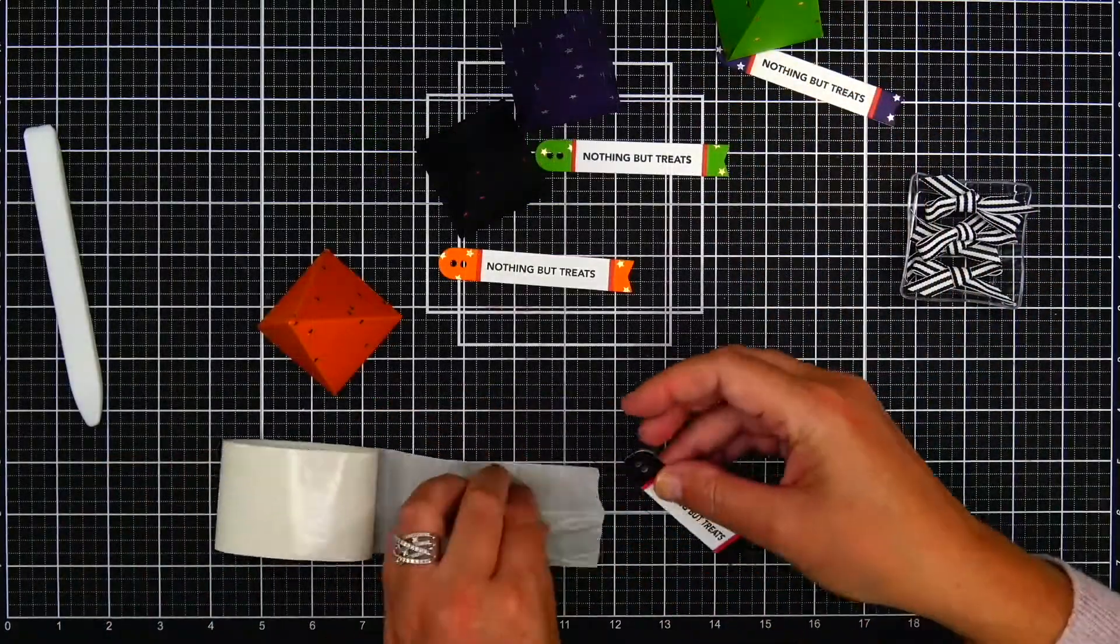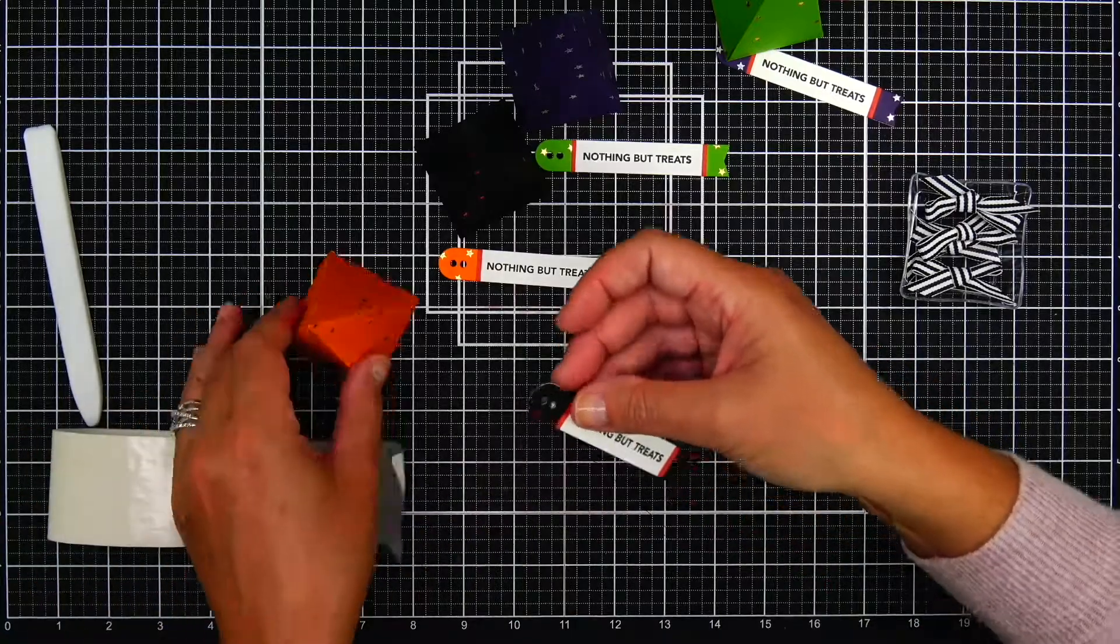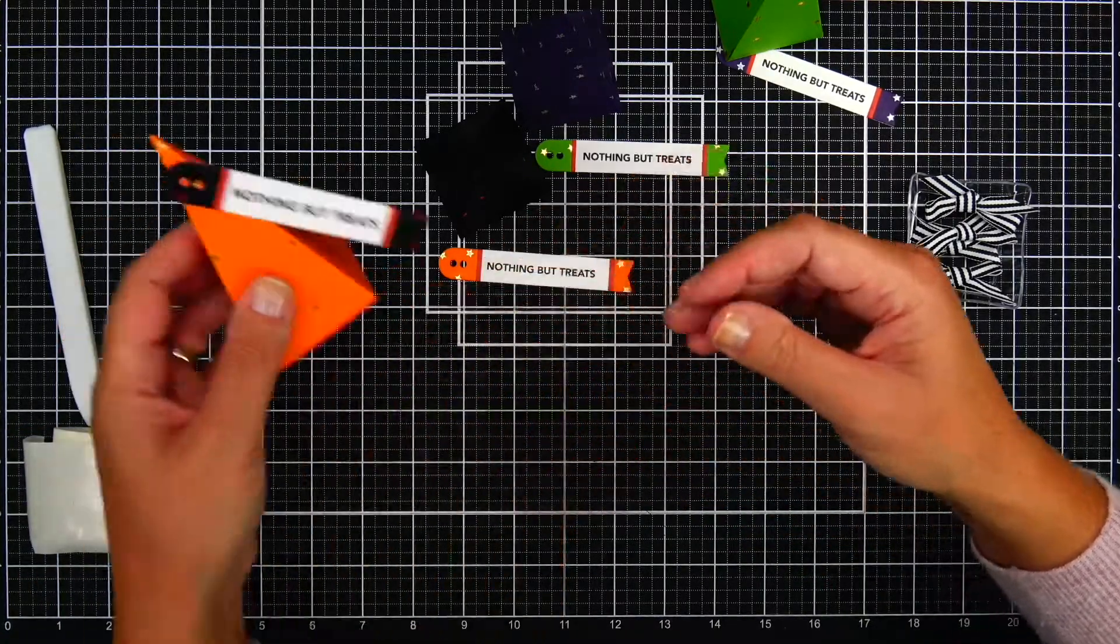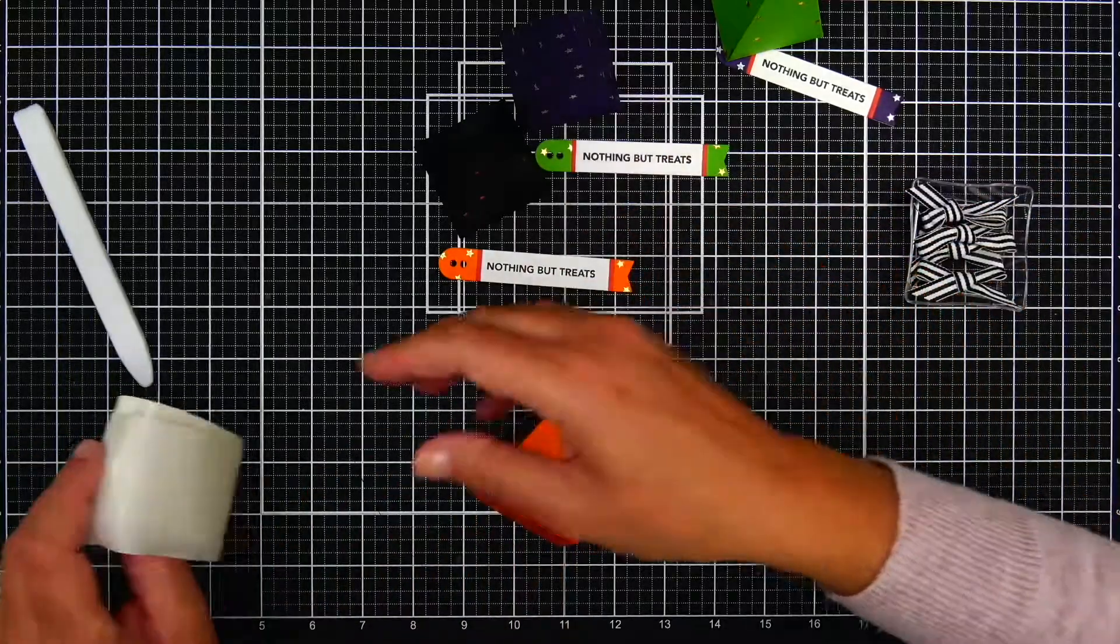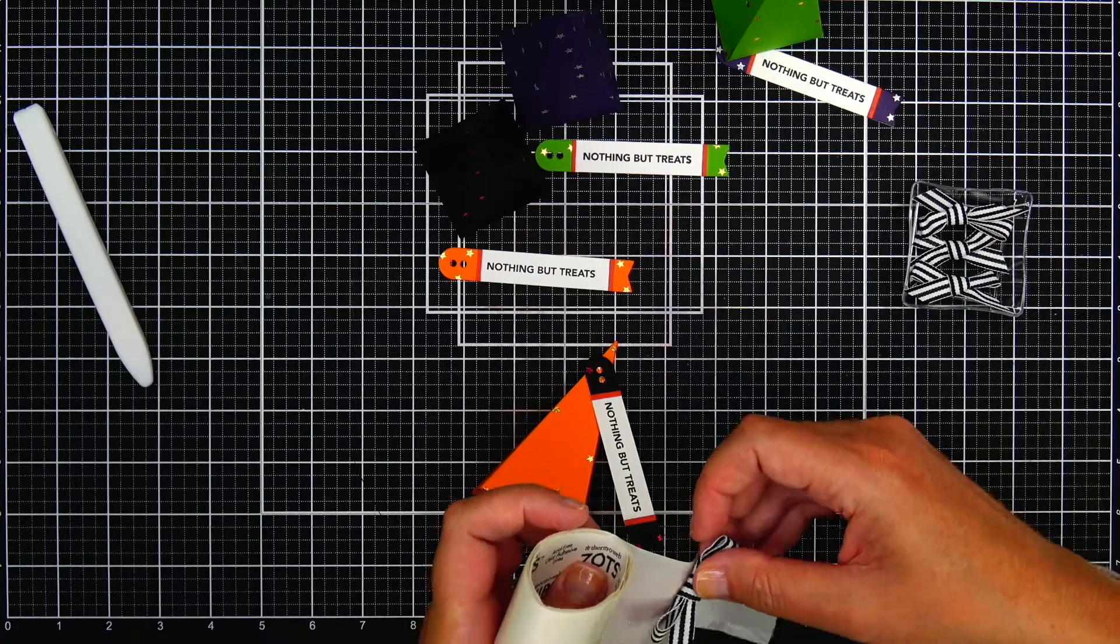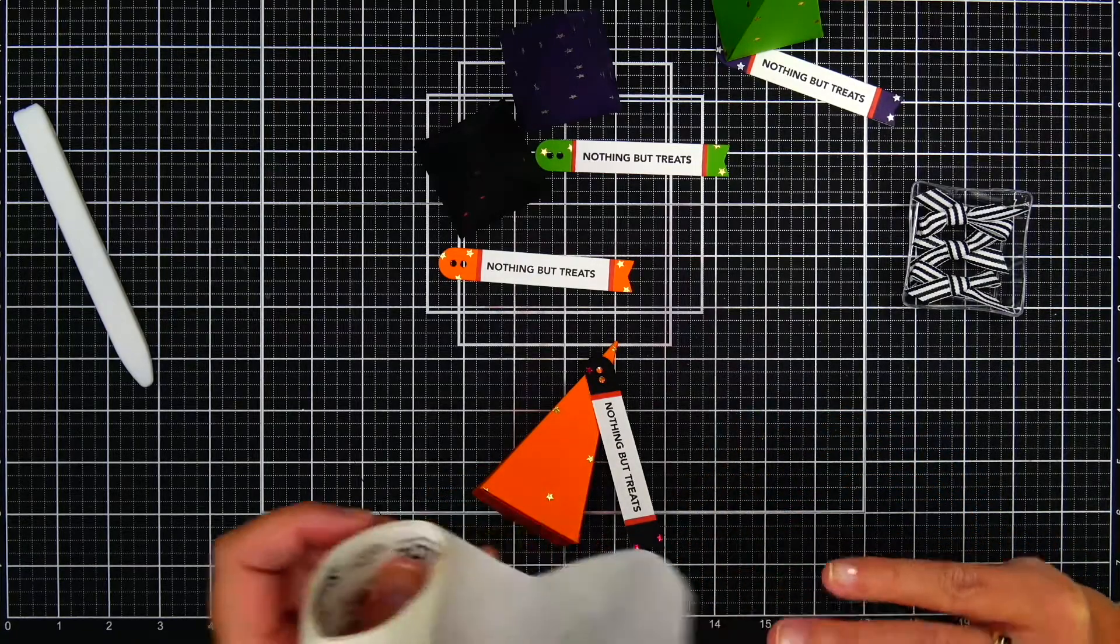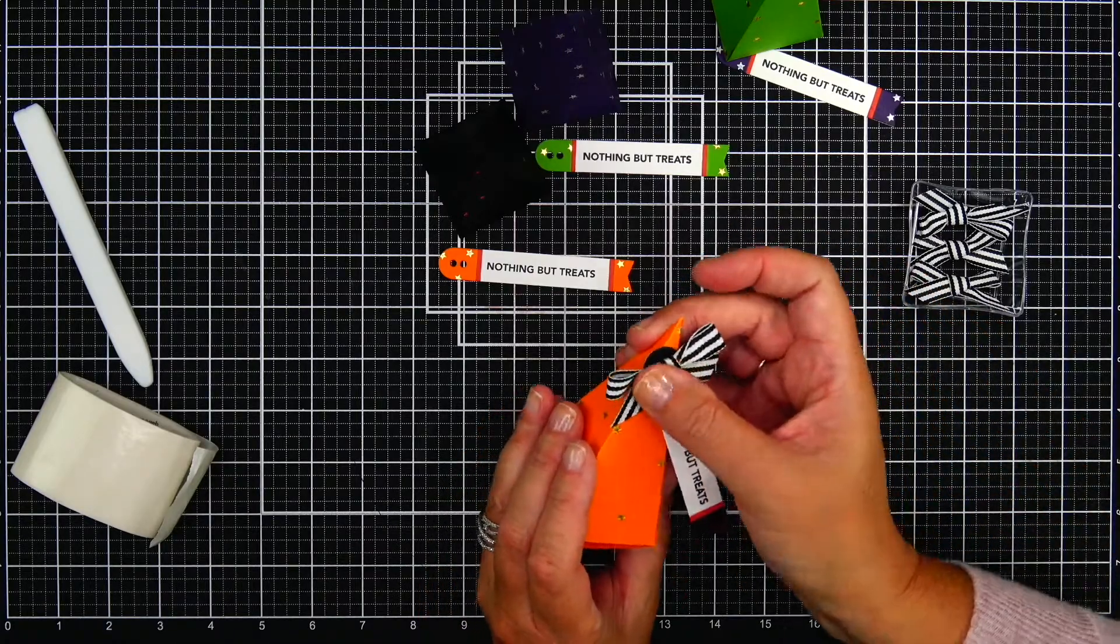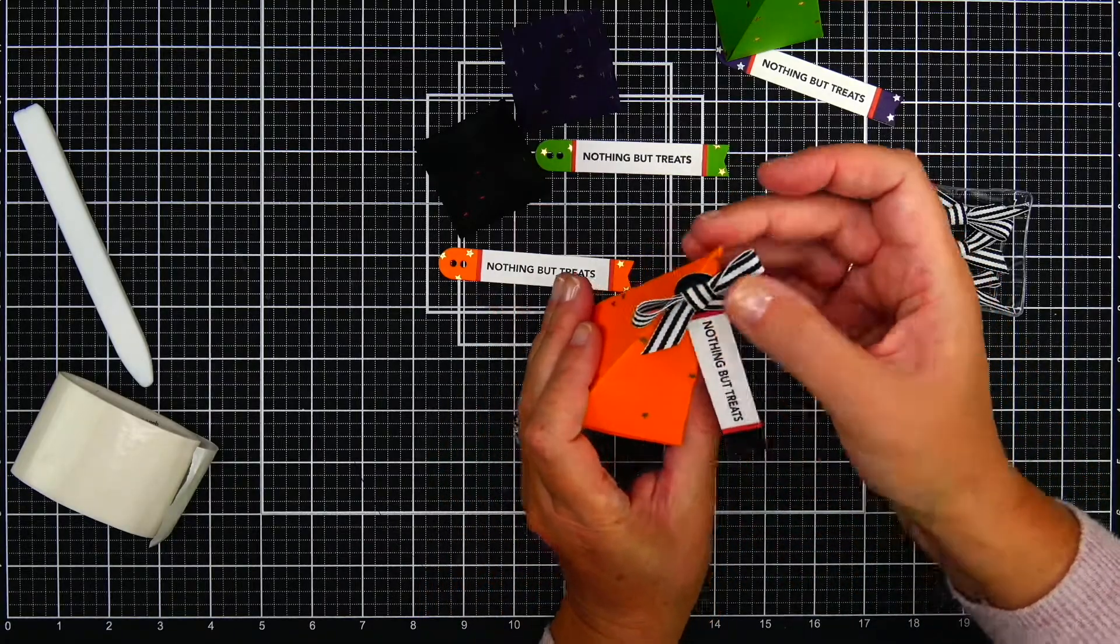I'm going to bring out zots, which are sticky circles. I'm going to put it on the back of the tag, which will then stick to the box. And then I'm going to use another zot to put on the back of the bow and then attach the bow to the tag.